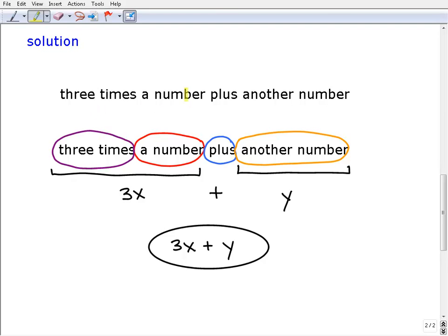So three times a number, let's kind of just pull out some key phrases within this sentence. So I'm going to focus on this, a number, and this other part right here, another number.